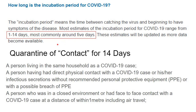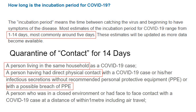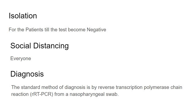The incubation period for COVID-19 ranges between 1 to 14 days; most commonly it is around 5 days. For quarantine purposes, contacts are monitored for 14 days. Contacts include: a person living in the same household as a COVID-19 case; a person having direct physical contact; a person who had contact without PPE or with a possible breach of PPE; and a person in a closed environment or who had face-to-face contact within 1 meter, including during air travel. Quarantine is for exposed contacts; isolation is for the patient, until the test becomes negative.